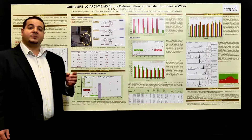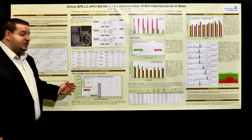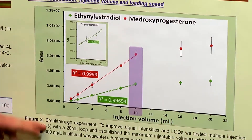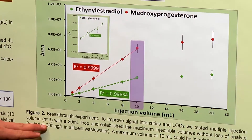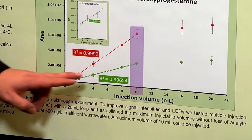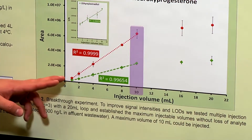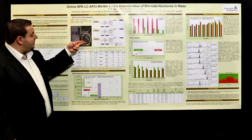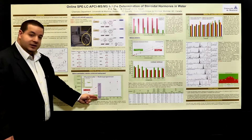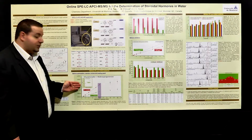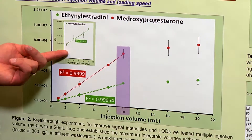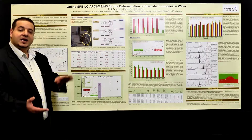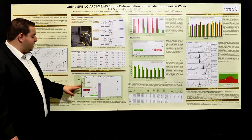First, we optimized the different parameters of the online SPE. We looked at loading volume, as this is important for achieving lower limits of detection. We injected a fixed concentration of 200 nanograms per liter, varying from 1 ml to 20 ml injection. Once the curve was no longer linear, we had breakthrough. Using the tandem SPE method, we're actually able to inject 10 ml. Also, looking at signal-to-noise, it keeps rising with increasing volume, showing a difference between peak height and noise.